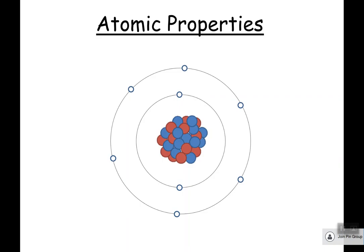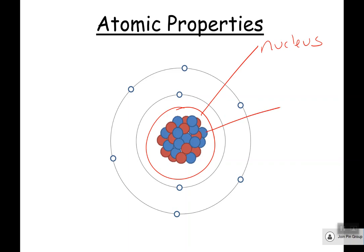So first off, this is an atom that you're familiar with — a really basic diagram. We're going to come later on to the different models of the atom over time. Essentially we've got a few different parts. We have this bit in the center called the nucleus. A nucleus is made up of two types of subatomic particles: one called a neutron and one called a proton. Then orbiting the nucleus you have electrons.